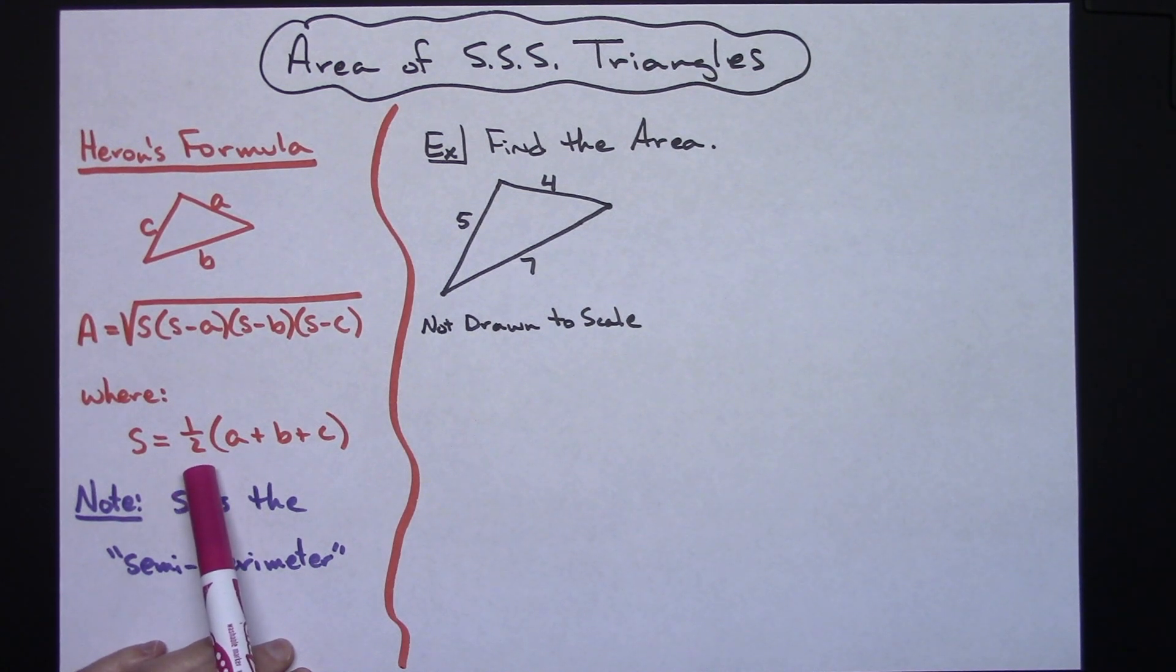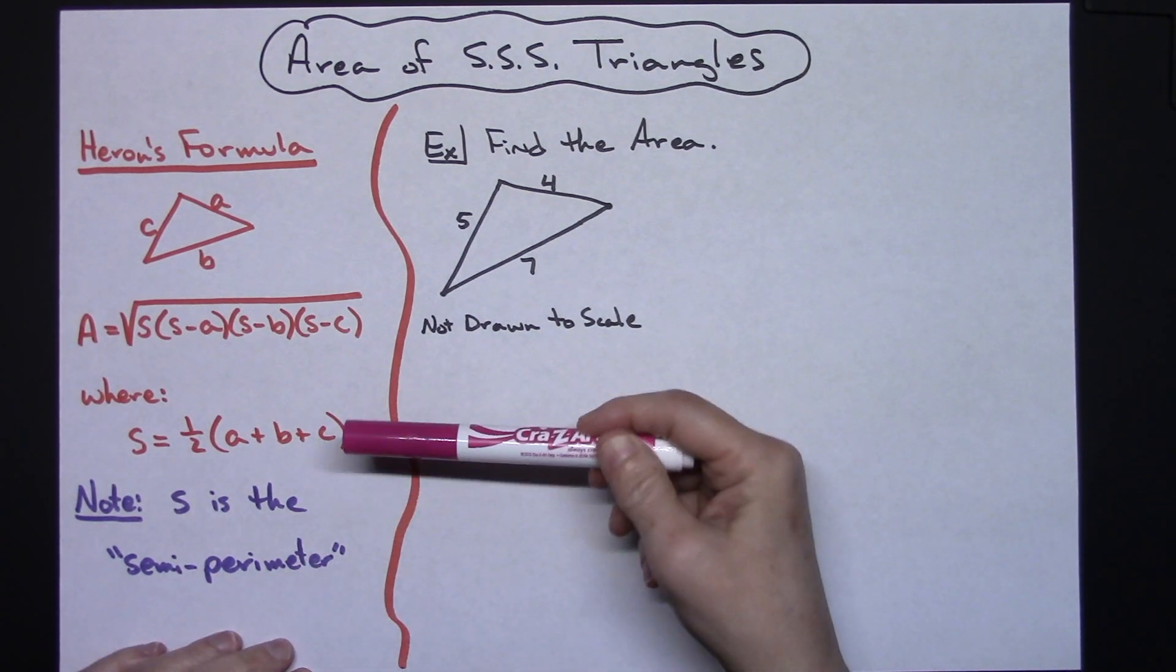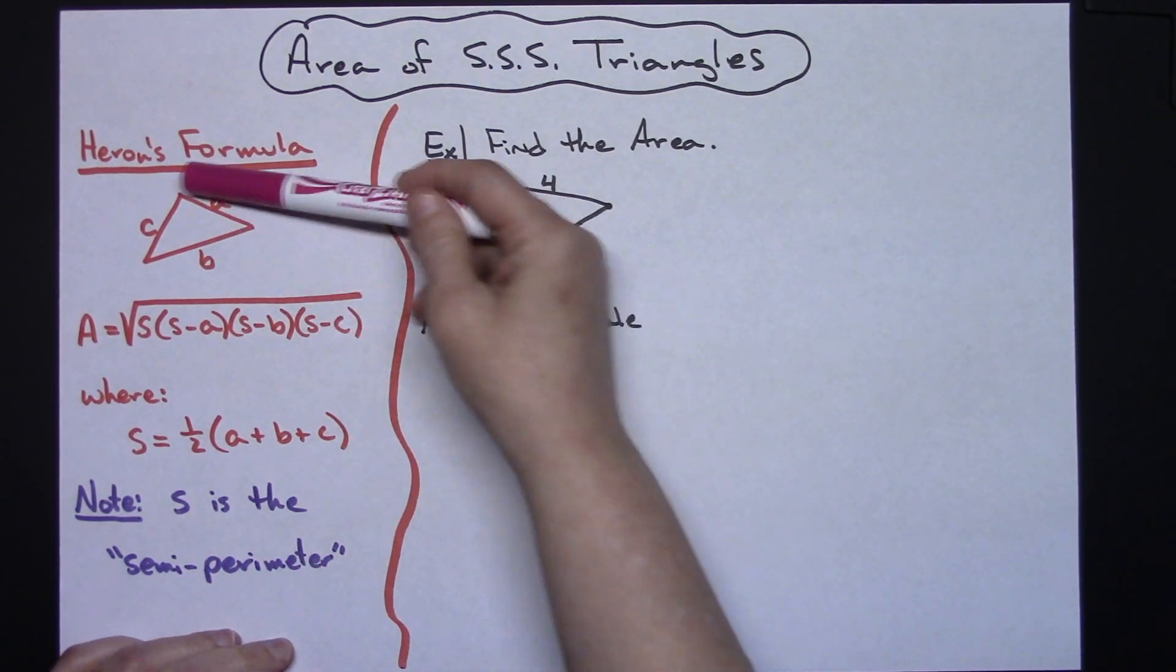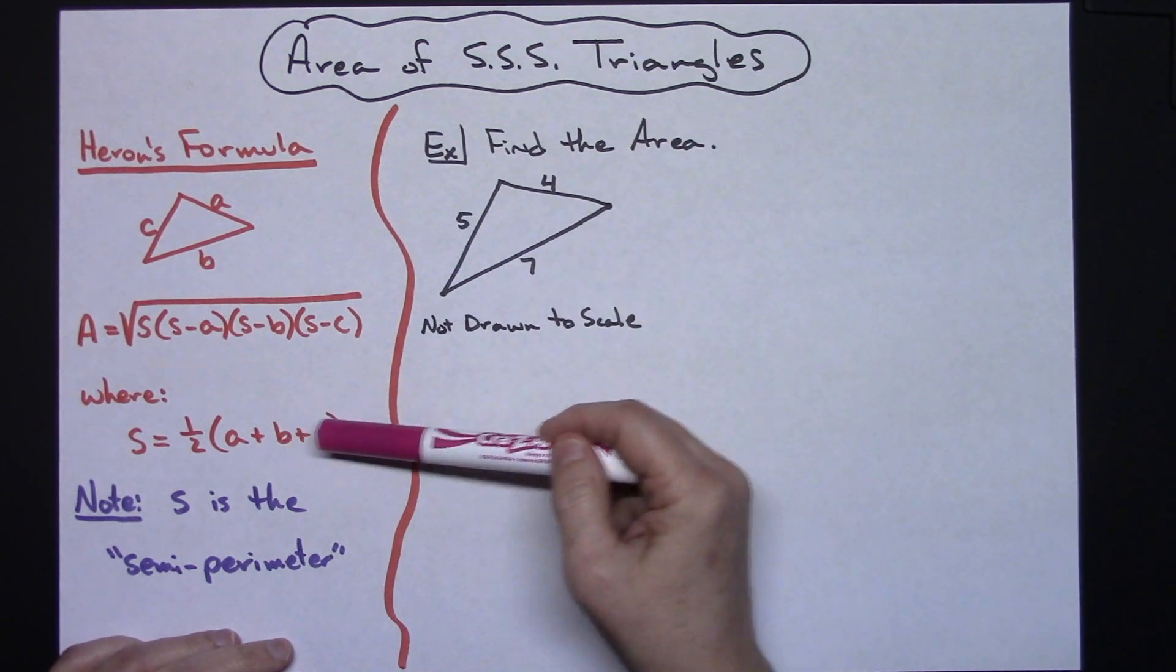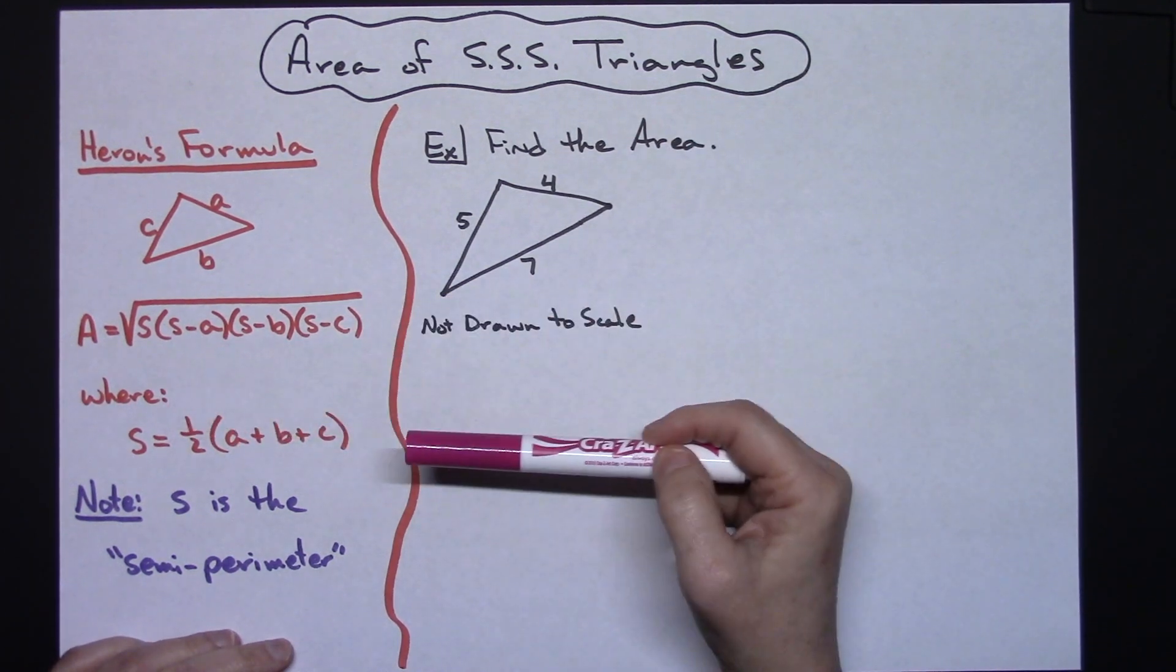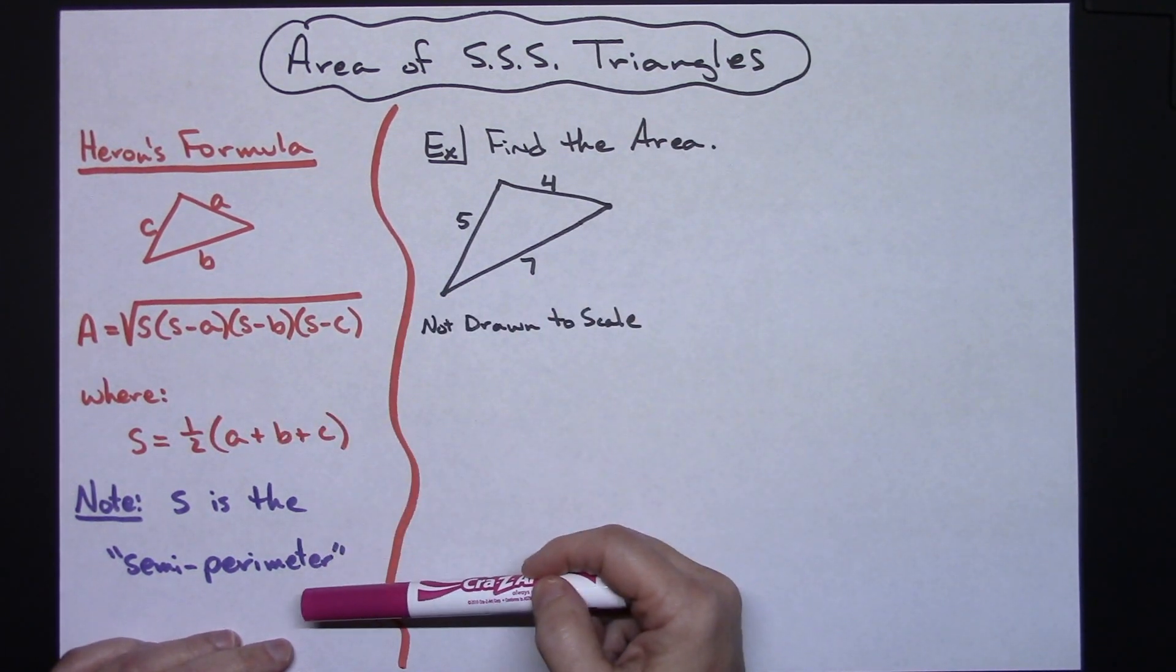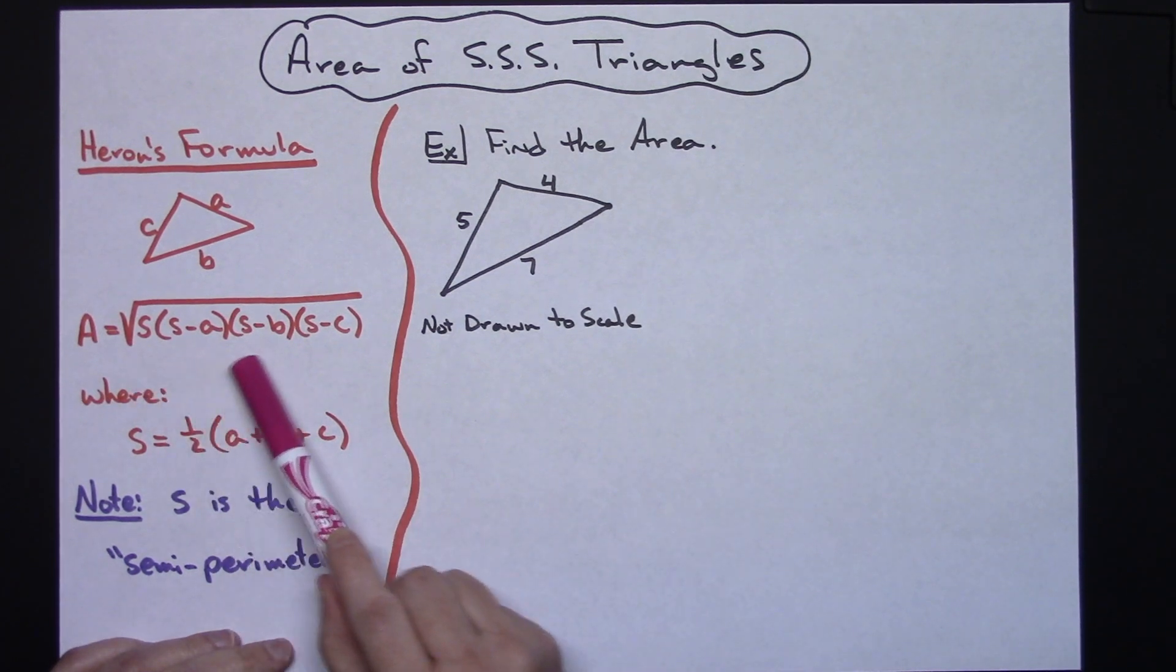Your s that is in the formula is half of the sum of the sides, so a plus b plus c and then half of that value. Now if we add up all the sides that's called the perimeter. If we add up all the sides and then divide it in half, then we have the semi-perimeter.